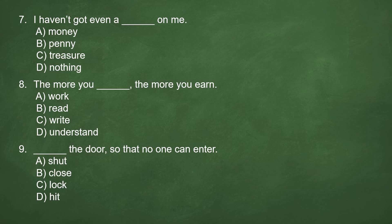Number 7. I haven't got even a blank on me. A. Money. B. Penny. C. Treasure. D. Nothing. Answer: B. Penny. I haven't got even a penny on me.